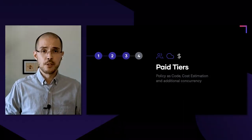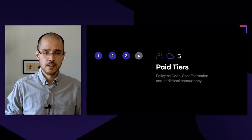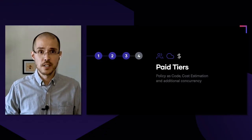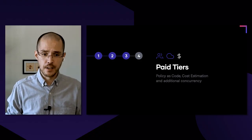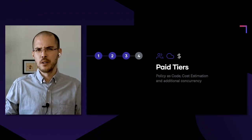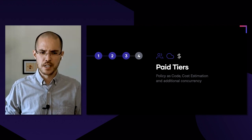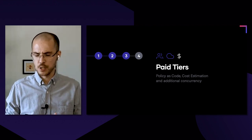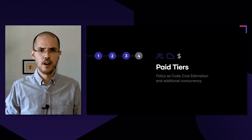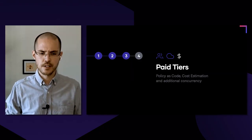Moving on, we introduced paid functionality with paid tiers. The features included Sentinel, our policy as code language, cost estimation, and the ability to do more concurrent runs on the platform. At this point, we were starting to push the platform further. Again, these were informed by knowledge from the enterprise platform, where we'd been serving some of the largest businesses in the world with Terraform Enterprise. Moving into paid functionality was something we could easily do.